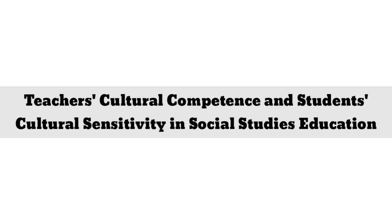For our next strand, we have Humanities and Social Sciences. Here are the sample correlational research titles for all the Humanistas out there. Our first title is Teachers' Cultural Competence and Students' Cultural Sensitivity in Social Studies Education. In this study, we are going to figure out if the teacher's wide knowledge in terms of culture affects students' cultural sensitivity — whether students tend to respect cultural differences more when their teacher is more adept and knowledgeable about different cultures.